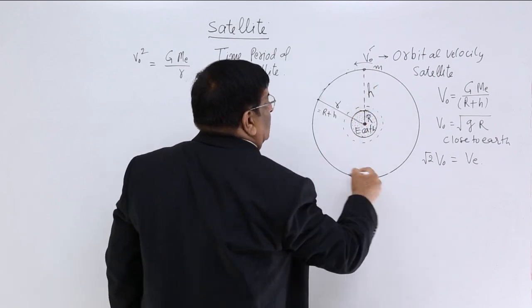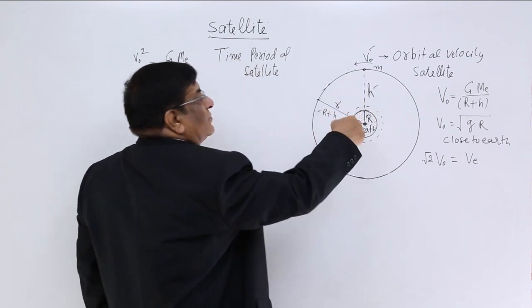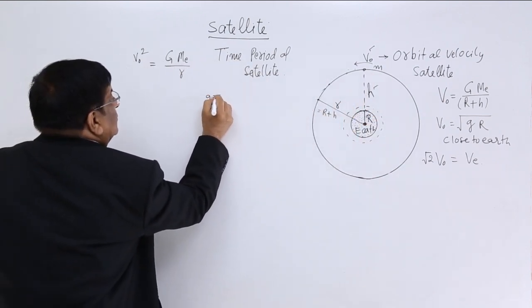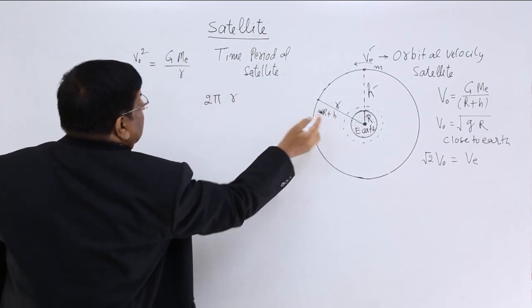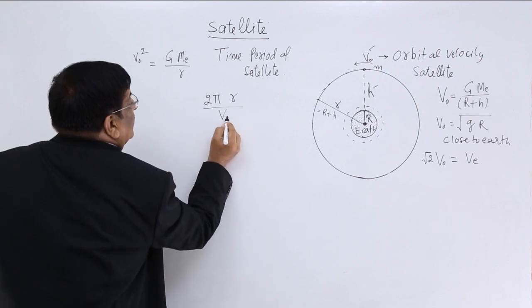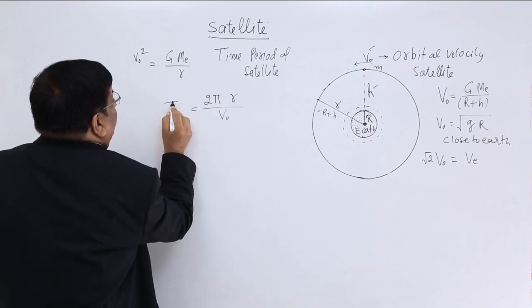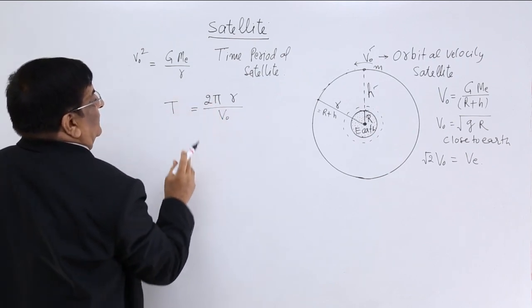we must find out the total distance. This is r plus h, so this total circumference will be 2 pi r, r means r plus h. This is the total distance and orbital velocity, this gives us the time period. So with this we proceed further.